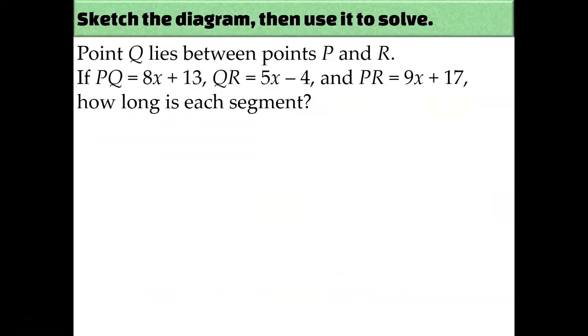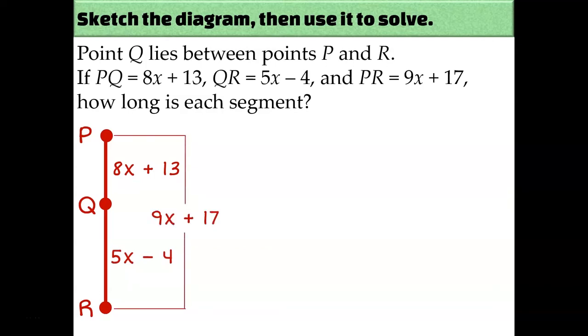Our next problem again requires us to draw our own diagram. Point Q lies between points P and R, so I'm going to draw myself three points in a line. And I'm going to label Q as the point in the middle, and P and R on either side. Now I'll label my diagram with each of those algebraic expressions. PQ is 8x plus 13, QR is 5x minus 4, and PR is 9x plus 17. For this, I would set up my segment addition postulate as PQ plus QR equals PR, and then plug in each of my expressions accordingly.